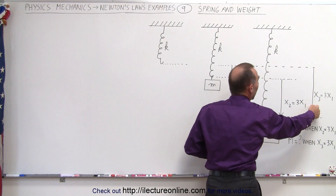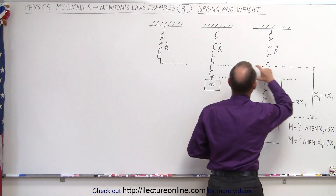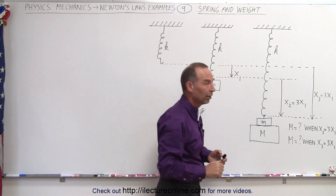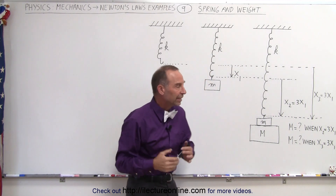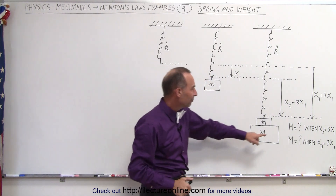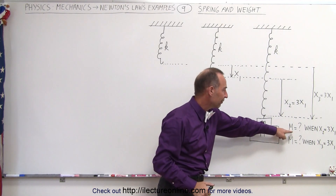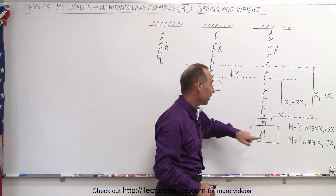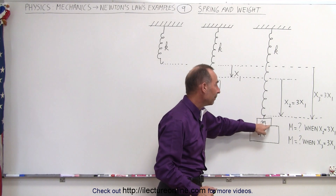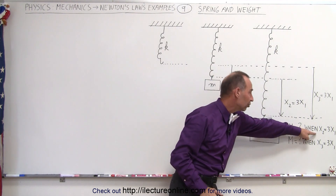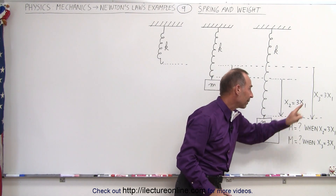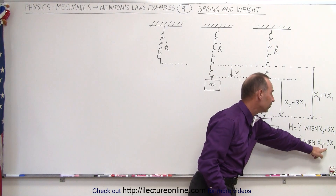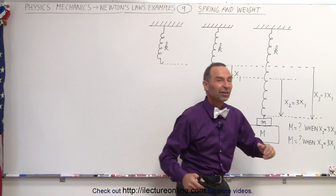Or sometimes it may be expressed in terms of the total distance of elongation now being three times the initial distance x1. So in either case, we're trying to find the value of big M in terms of small m when x2 is equal to three times x1, or when x3 is equal to three times x1.